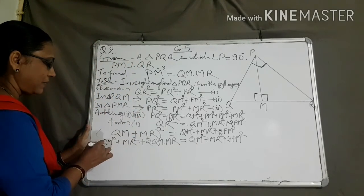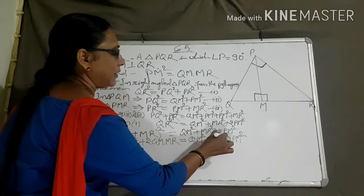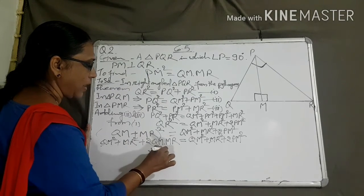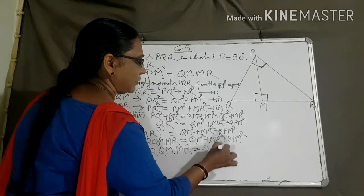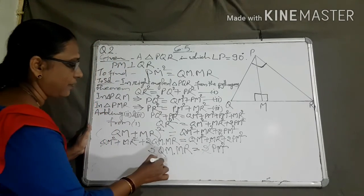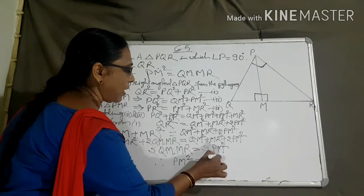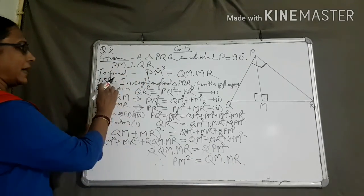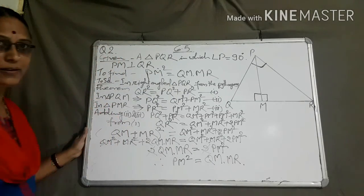On both sides, QM square cancels and MR square cancels. Now we have twice QM into MR equal to twice PM square. The two on both sides also cancels. Therefore we get PM square equal to QM into MR. This is exactly what we had to find out. PM square equal to QM into MR. Okay? Thanks.